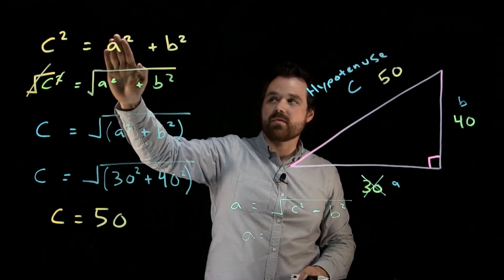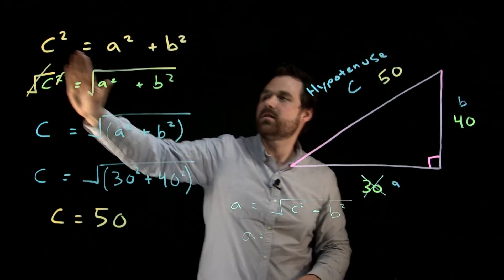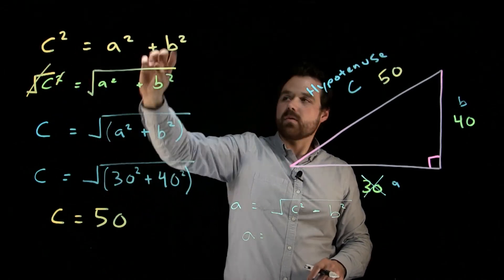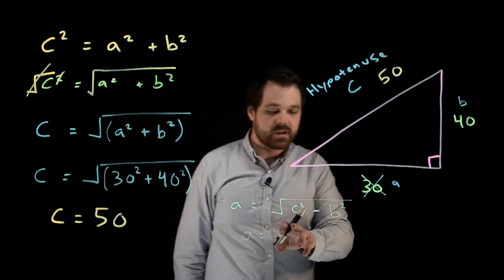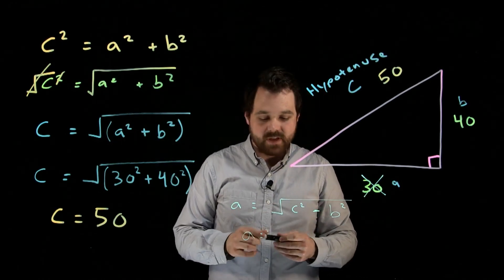And that would be how we would solve the third side. So we're transposing for A. Move that over. Square root of A equals square root of C squared minus B squared. So that's how we would solve that.